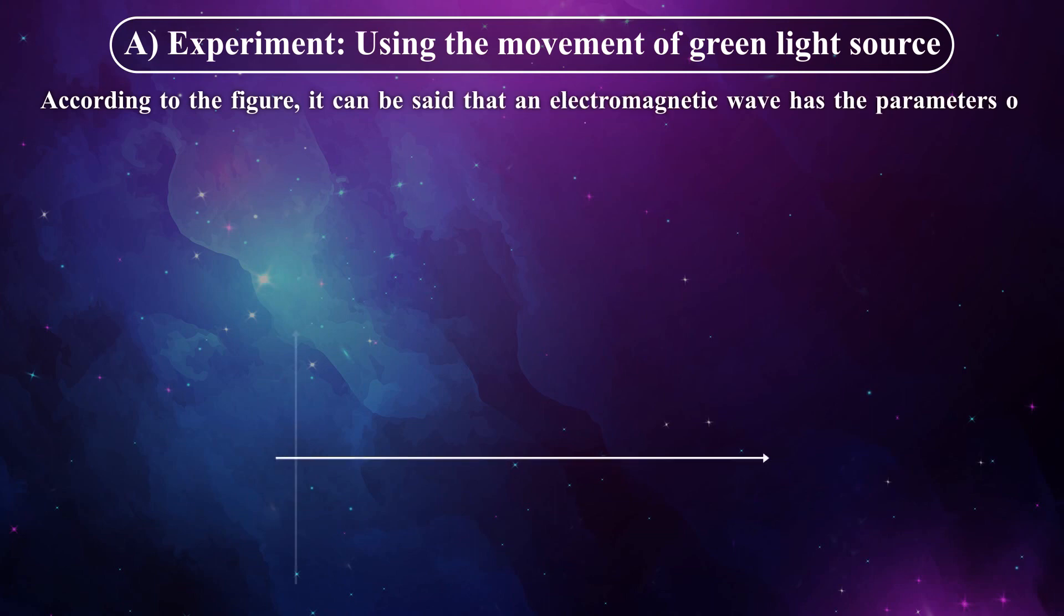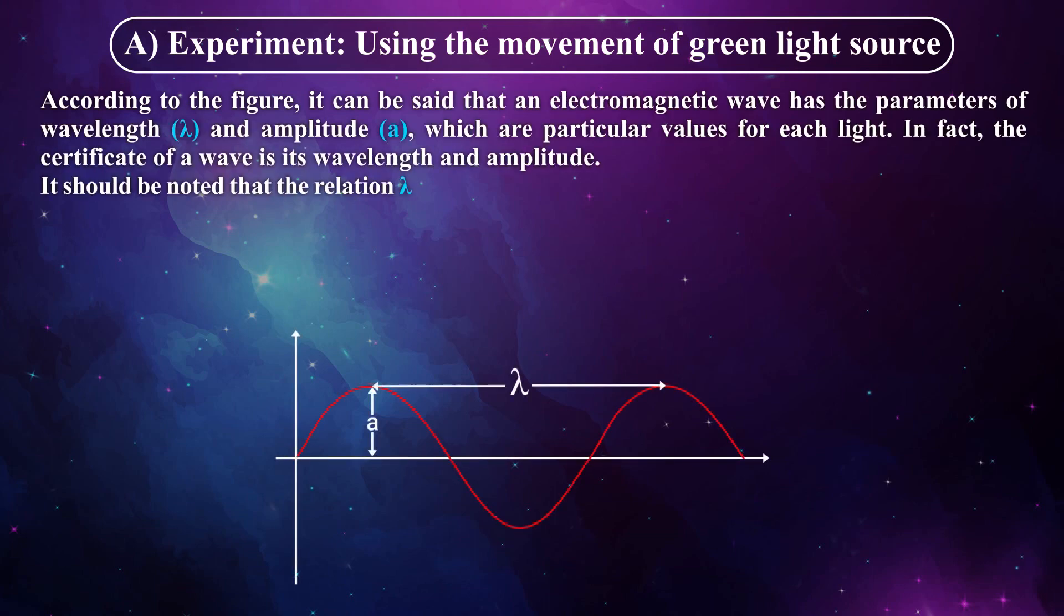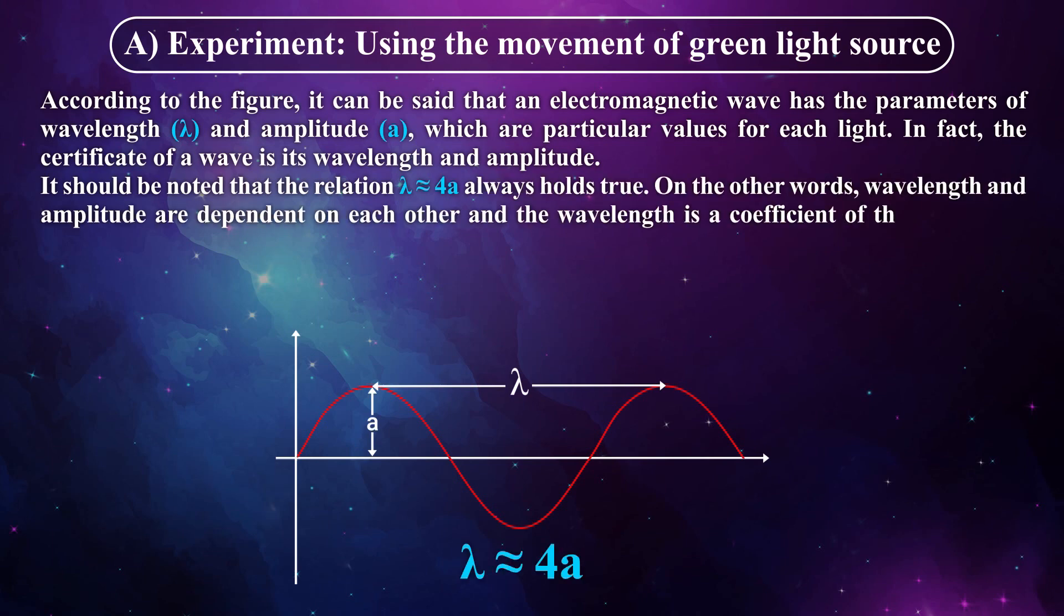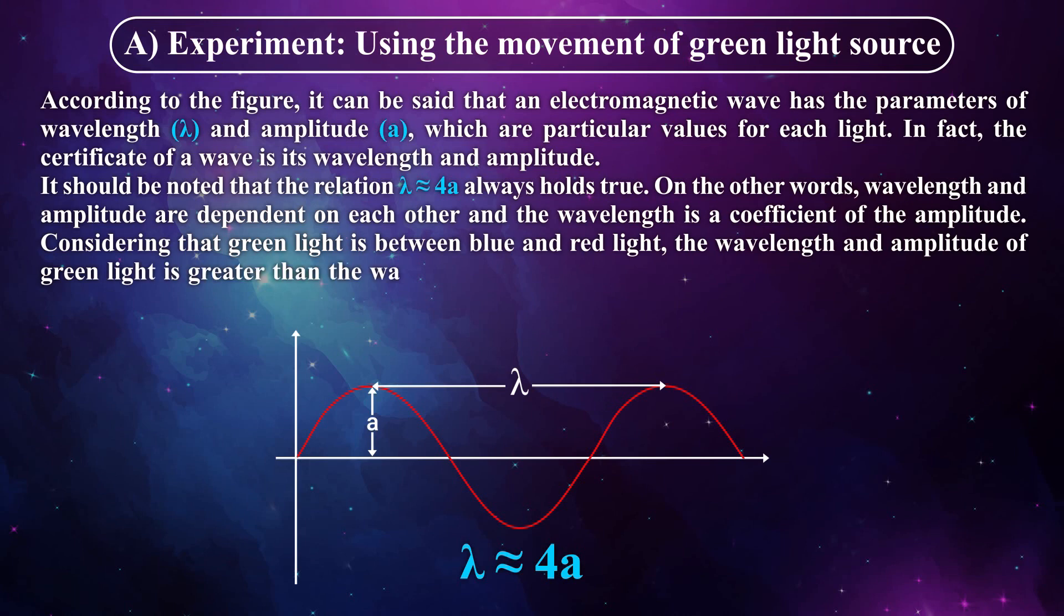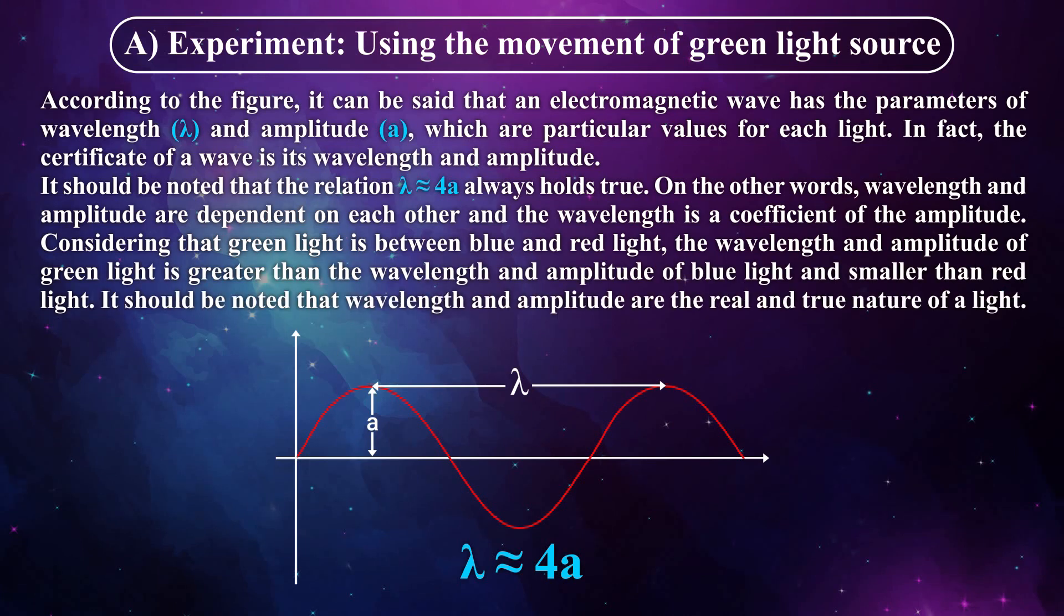According to the figure, it can be said that an electromagnetic wave has the parameters of wavelength lambda and amplitude A, which are particular values for each light. In fact, the certificate of a wave is its wavelength and amplitude. It should be noted that the relation lambda is approximately equal to 4A always holds true. In other words, wavelength and amplitude are dependent on each other and the wavelength is a coefficient of the amplitude. Considering that green light is between blue and red light, the wavelength and amplitude of green light is greater than the wavelength and amplitude of blue light and smaller than red light. It should be noted that wavelength and amplitude are the real and true nature of a light.